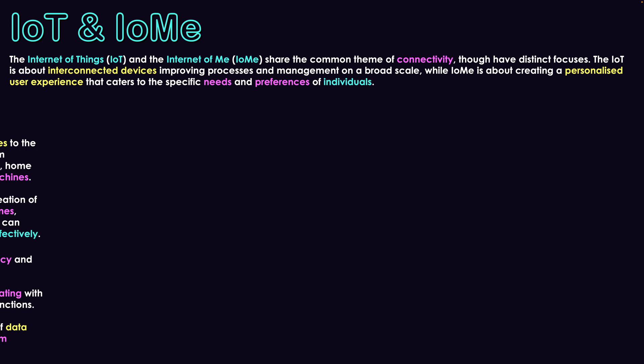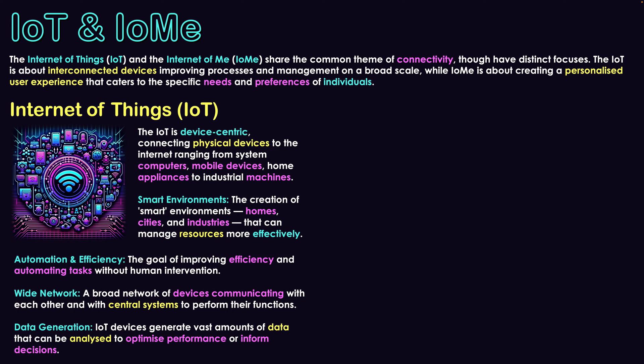The first concept is the IoT — the Internet of Things. Essentially, it's device-centric, where we've got connected physical devices that are connected to the Internet and established networks, ranging from a whole variety of different types of devices.